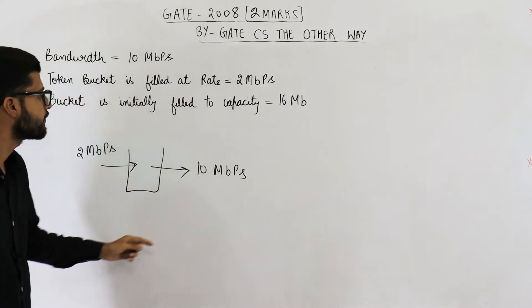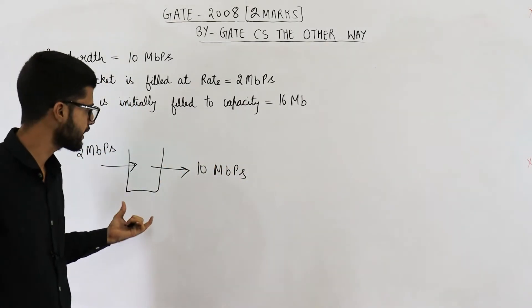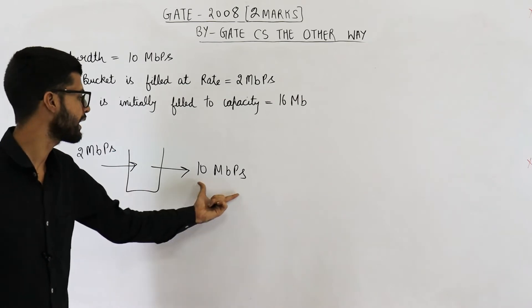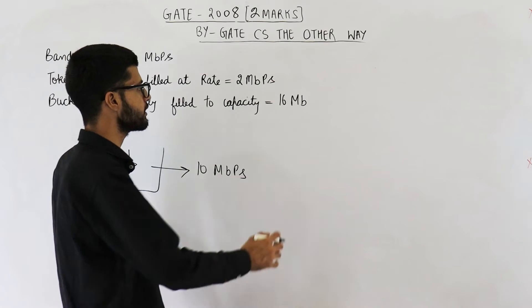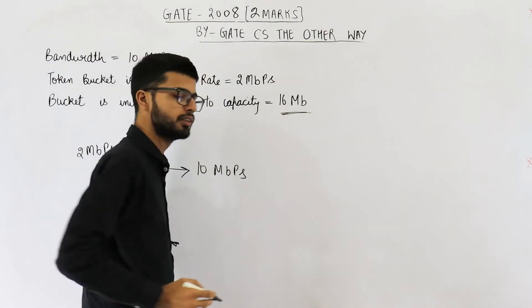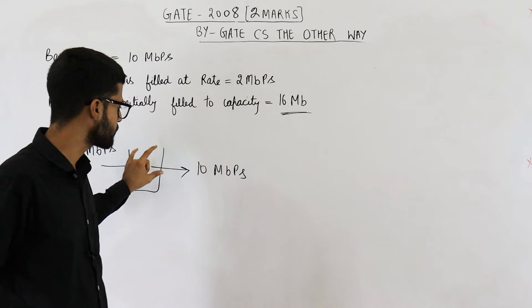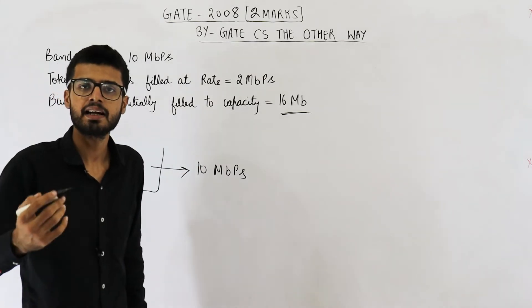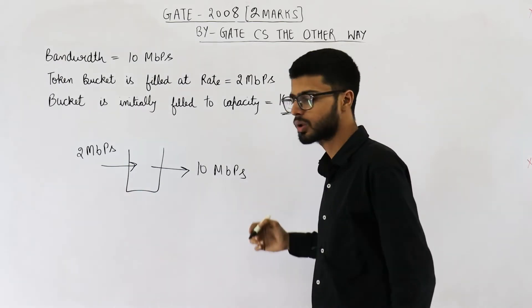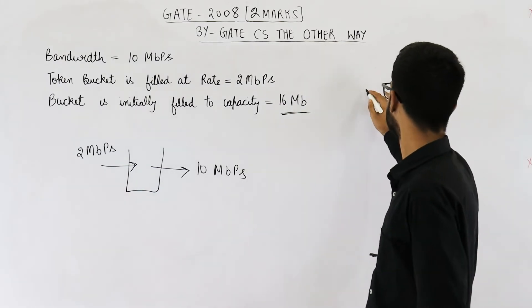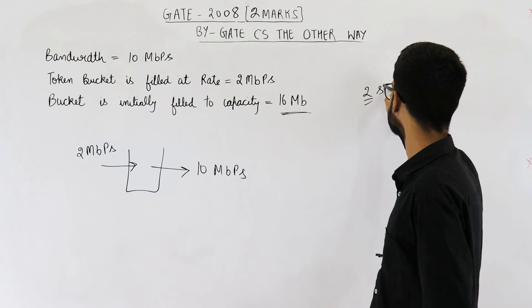So what is happening effectively? Effectively, you are taking tokens out at a rate of 10 minus 2, that is 8 Mbps. Total, you have 16 MB data or 16 MB tokens. In this bucket, you are taking away tokens at a rate of 8 Mbps. For how much time will these tokens last? It will be 2 seconds. So the answer is 2 seconds.